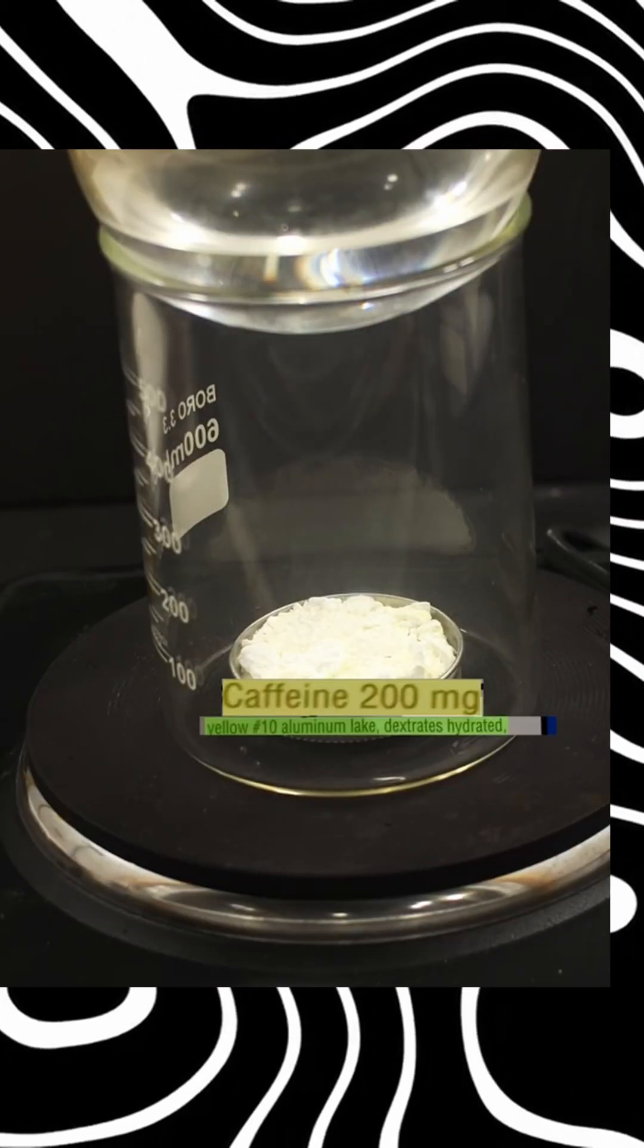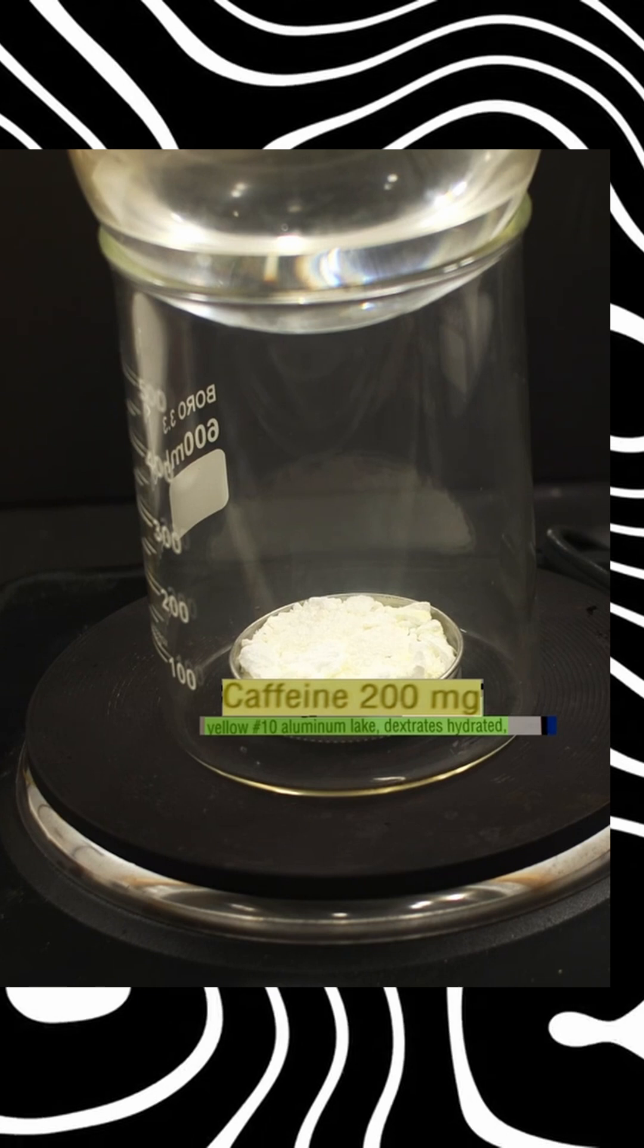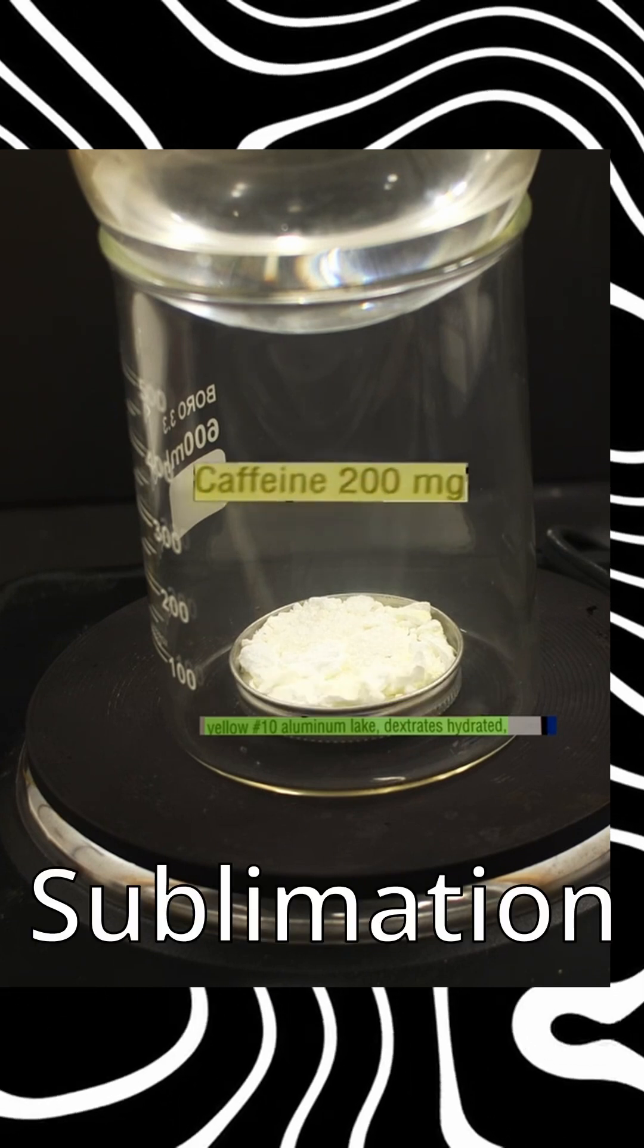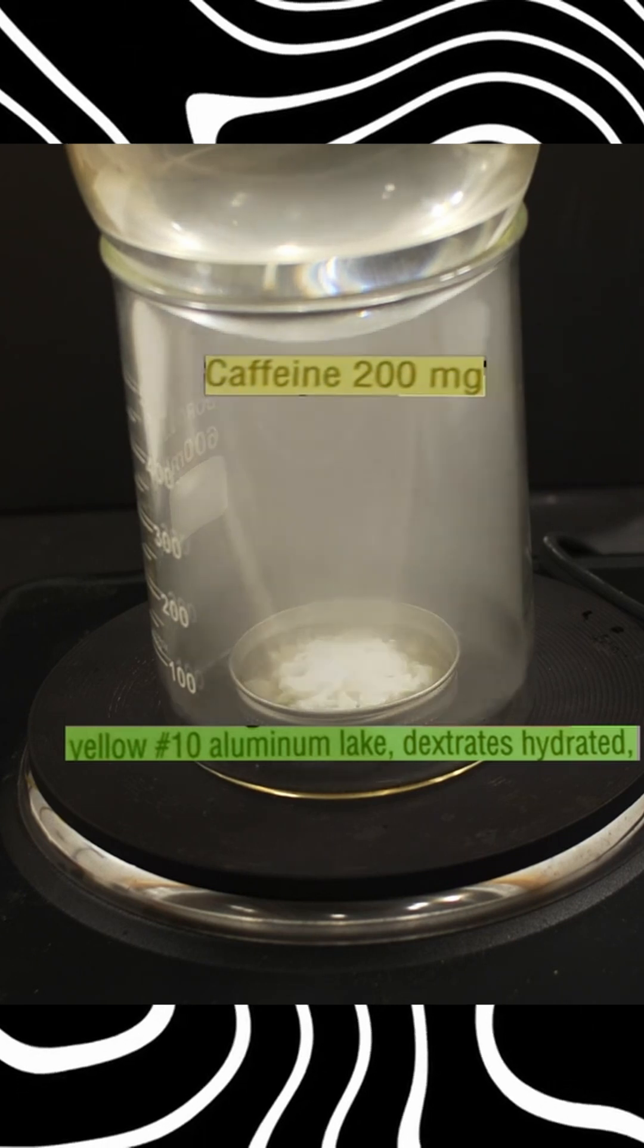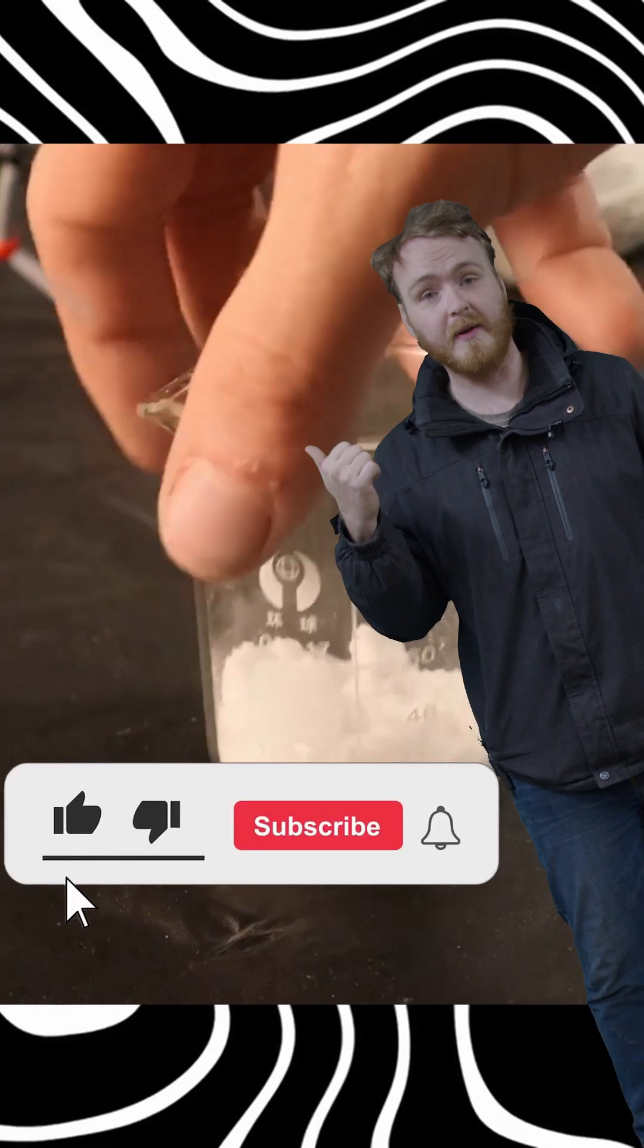And finally, we heat up the caffeine inside a closed container and it undergoes a process called sublimation. It turns into a gas and then that gas collects as a solid on the sides of the container. And there we go, pure caffeine from pills.